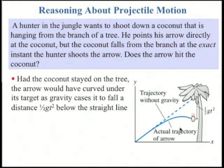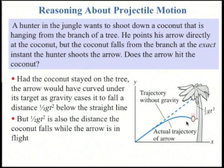Let's think about the coconut. Had the coconut stayed on the tree, the arrow would have curved under its target, as gravity caused it to fall a distance 1 half gt squared below the straight line. But it didn't, it fell. And 1 half gt squared is the distance that the coconut fell while the arrow was in flight. So they'll both fall a distance 1 half gt squared over the same time t, and by the time the arrow has reached the horizontal position of the coconut, it will be exactly the same distance below the straight line trajectory as the coconut has fallen. And yes, it'll hit it.